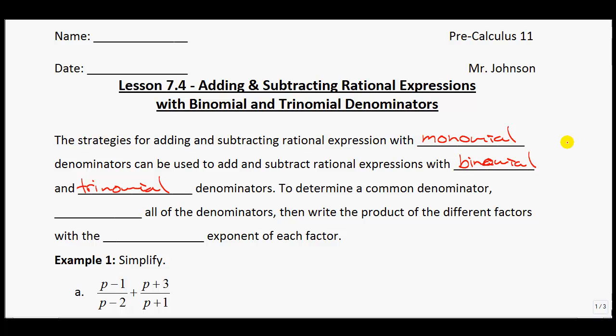The strategies for adding and subtracting rational expressions with monomial denominators can be used to add and subtract rational expressions with binomial and trinomial denominators. An example of a binomial would be x plus 2, and an example of a trinomial would be x squared plus 4x minus 4.